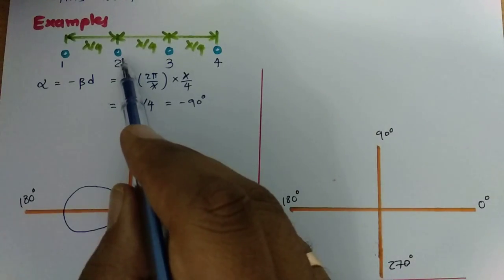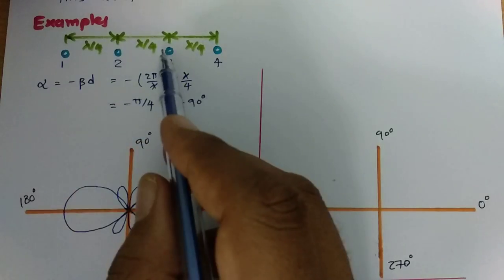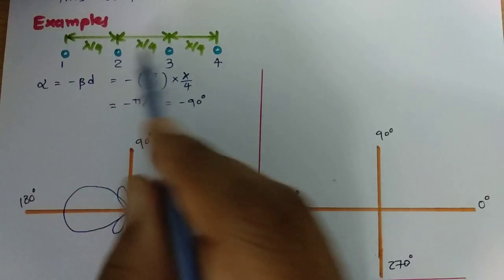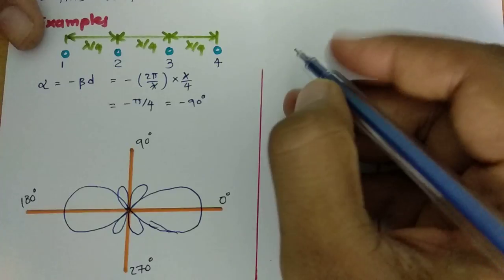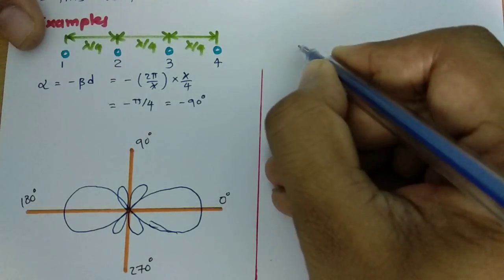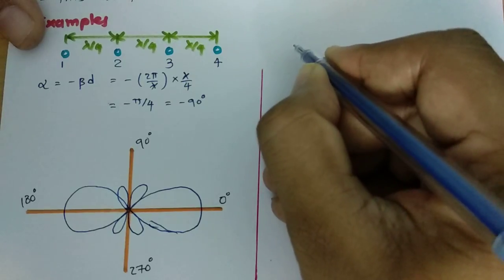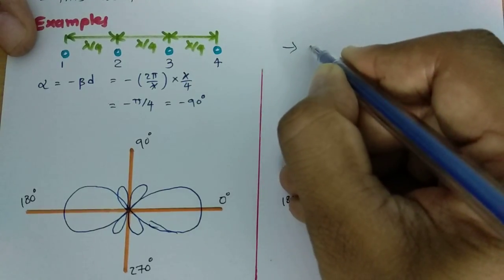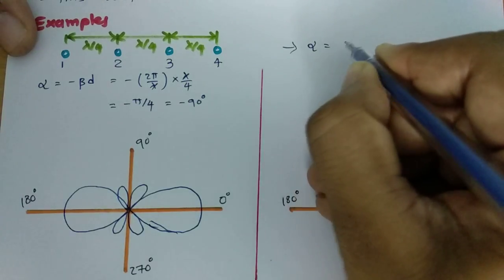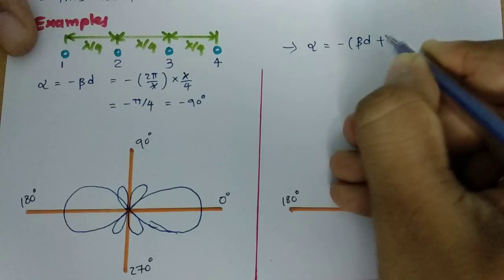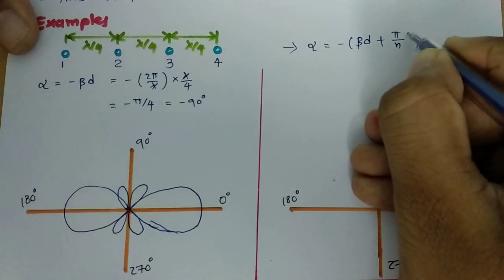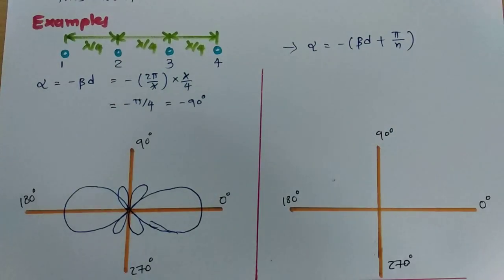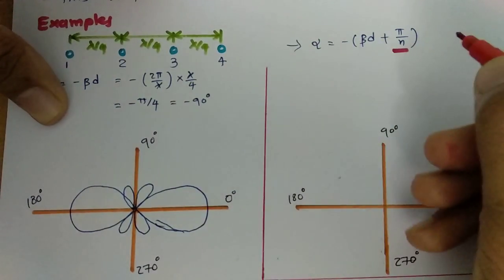The second element has 90 degree phase with respect to the first, and the third has 90 degree phase with respect to the second. Hansen and Woodyard suggested that by modifying the phase, one can achieve higher directivity. They proposed that the phase α should be -βd minus π/n. By adding this additional parameter, we can provide improved directivity to the array.